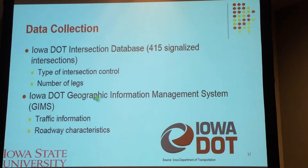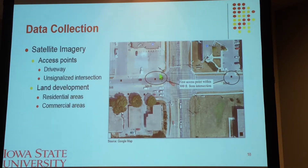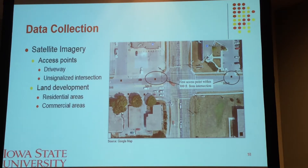The second data source is the Iowa DOT Information Management System, also known as GIMS. This file contains roadway information such as traffic information and roadway characteristics. We used this file to get AADT, number of lanes, posted speed, and more. We also did some manual data collection. Using a process called GIS digitizing using ARCGIS, we manually collected all access points within the study buffer, finding driveways and signalized intersections within a 600-foot buffer. We also identified the type of land development around each intersection using satellite imagery, finding two types: residential and commercial.